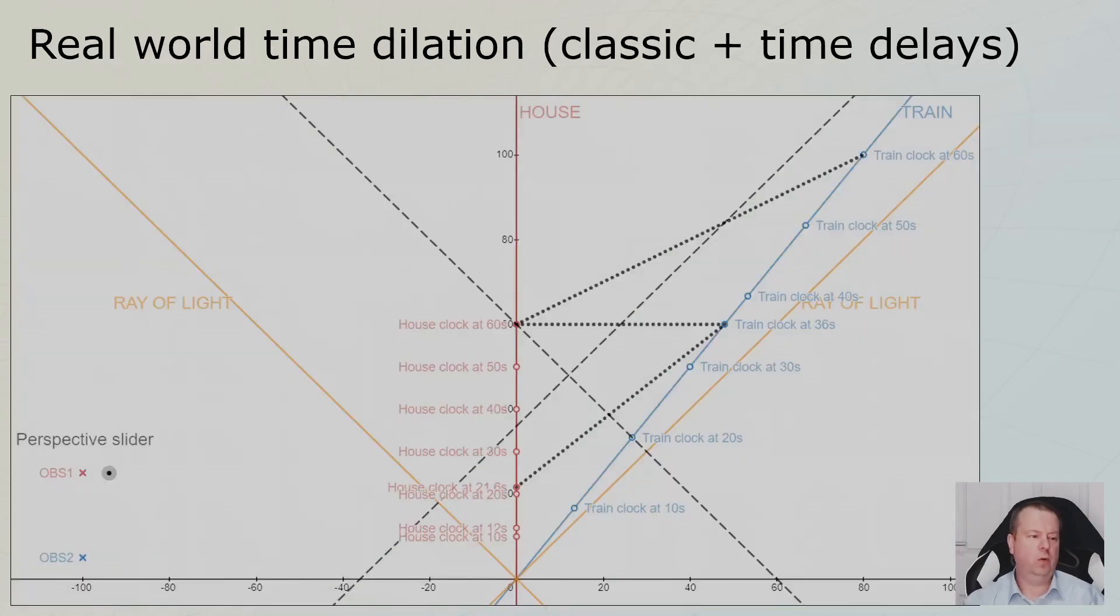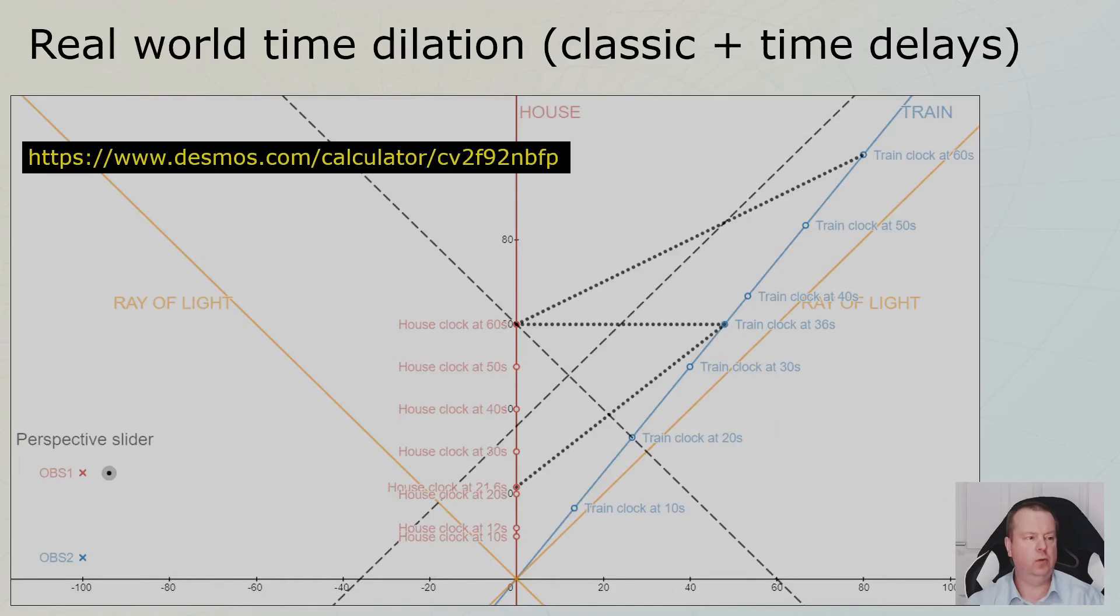So here I put in all the different events. I put in the events of the house, like 21.6 seconds and 60 seconds. And I put in the events on the train, like 36 seconds, and also his 60 seconds. And I put in those, and 20 seconds. And I put in the lines of the travel lines of the light. And you can just change the perspective. So let's do this. Are you up for it?